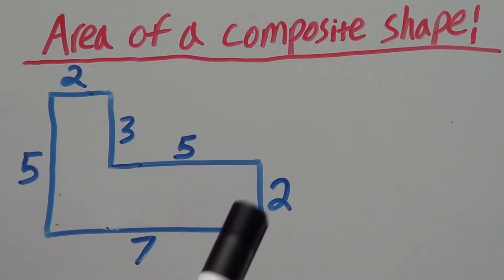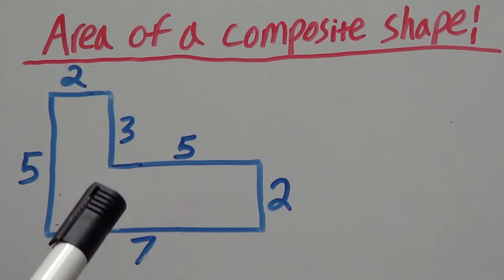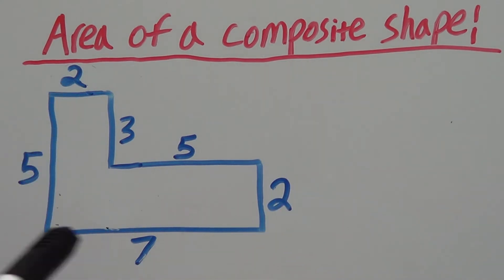Firstly, a composite shape is a figure that consists of two or more shapes. So here we can see this is a composite shape because it consists of two rectangles.